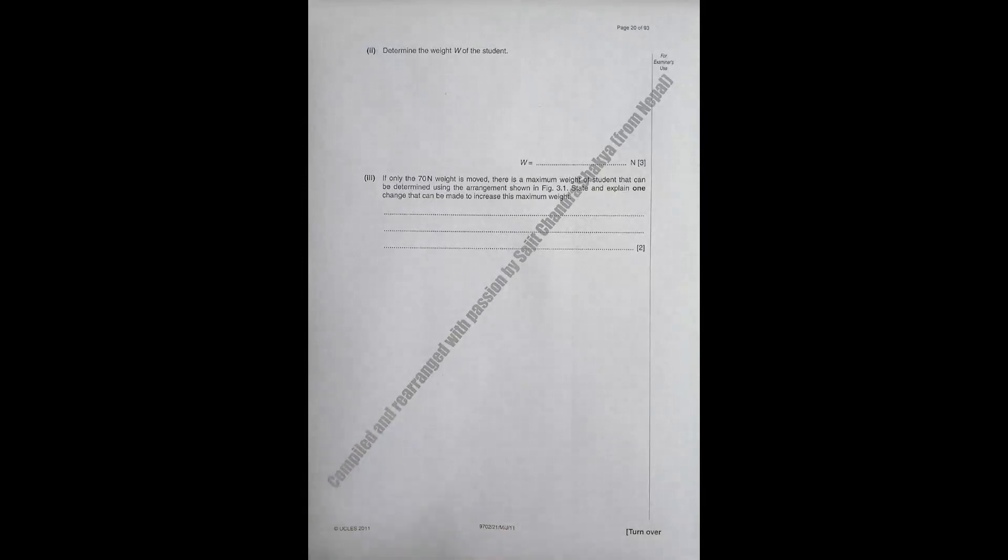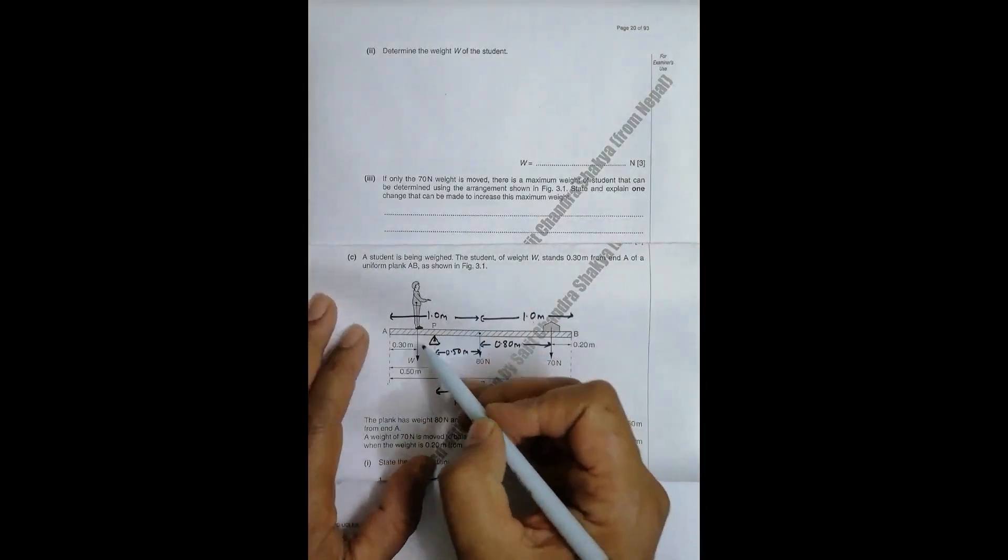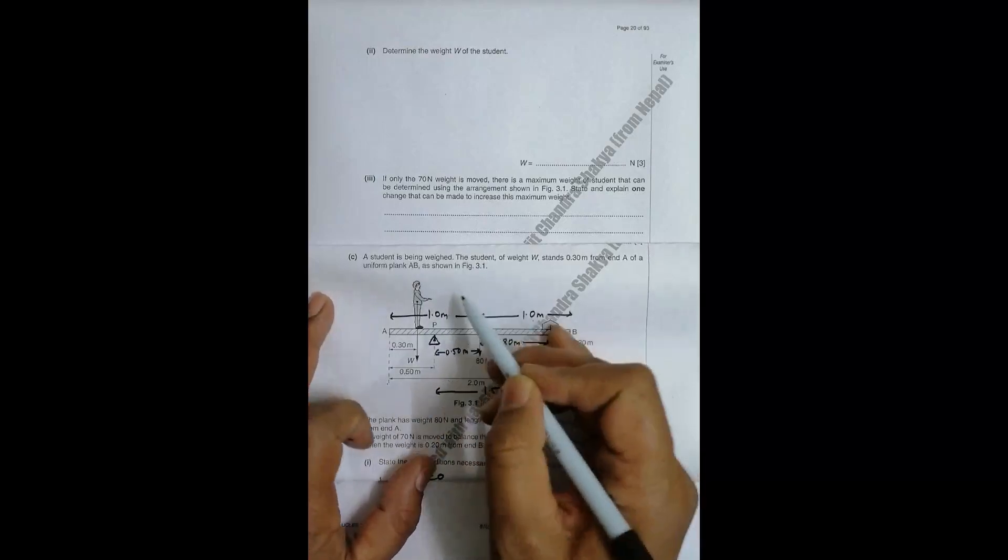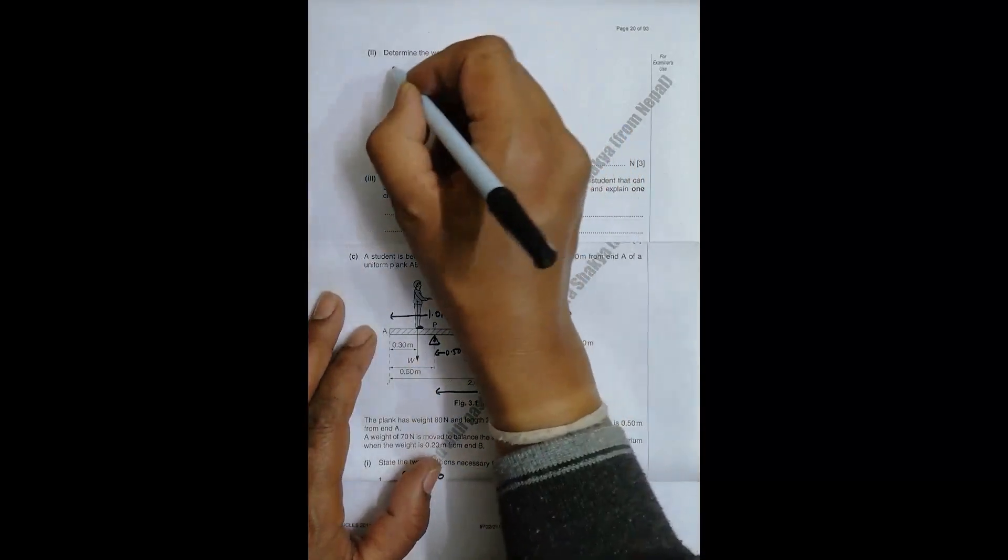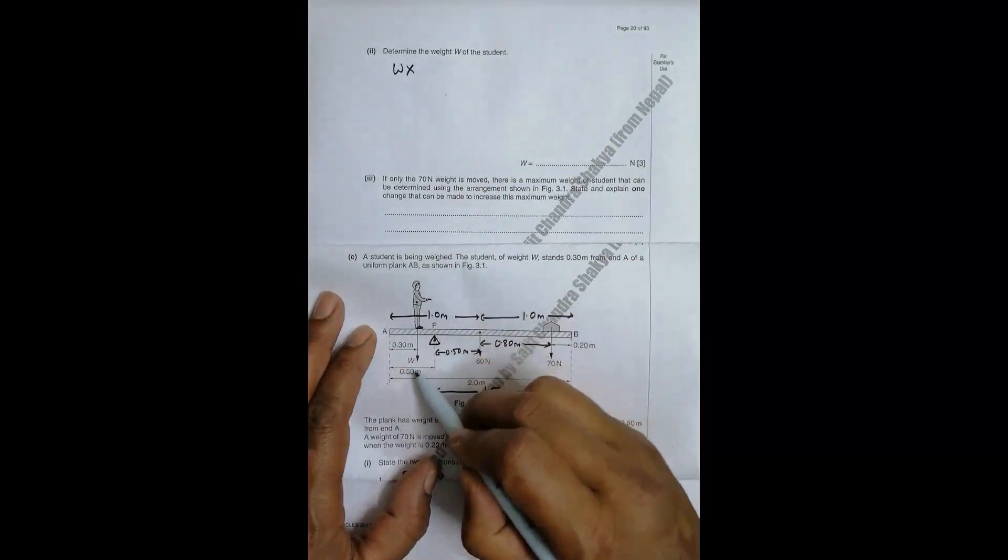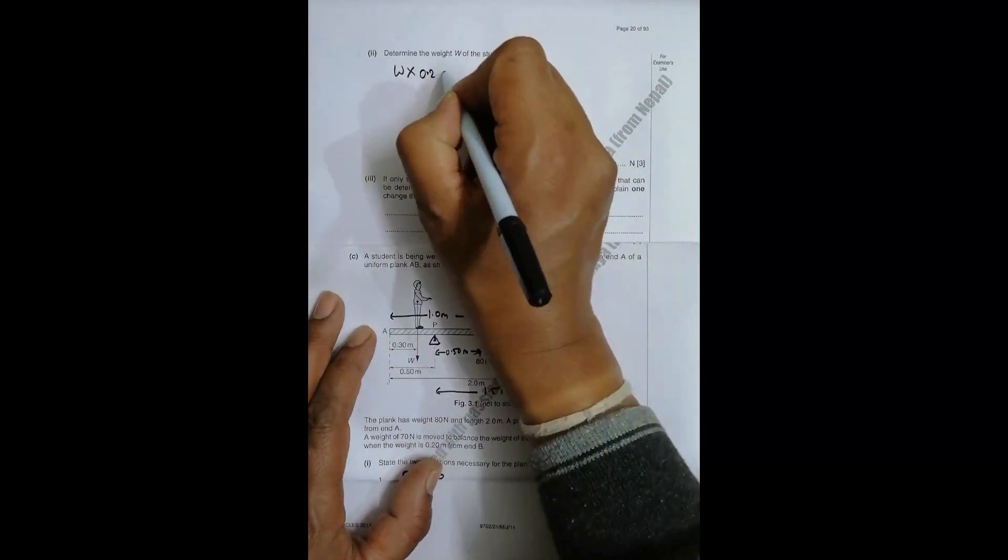Now, the main calculation part. It asks us to determine the weight of the student. Let me flatten the paper properly so that I can do the calculations. For this, let me remember that this pivot is P. The weight of this student will try to move this thing in anticlockwise sense. So the anticlockwise moment, we have W into this distance which is 0.20. This is anticlockwise moment, equal to.